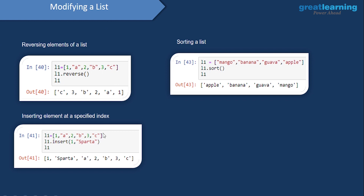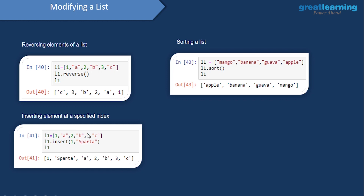If we want to insert an element at a particular index value — as opposed to append which adds at the end — we use the insert method. We type L one dot insert, then give the index position where we want to insert, and the value to insert. For example, at index number one we had A, but now we insert Sparta there. The insert method takes two parameters: first the index, second the value. After inserting Sparta at index one, the rest of the elements shift one index to the right — so A moves from index one to index two, and two moves from index two to index three.